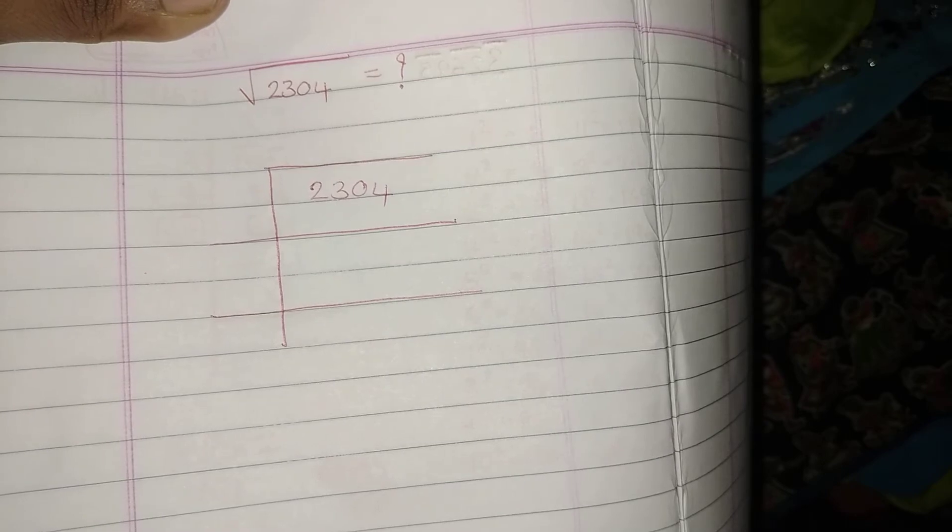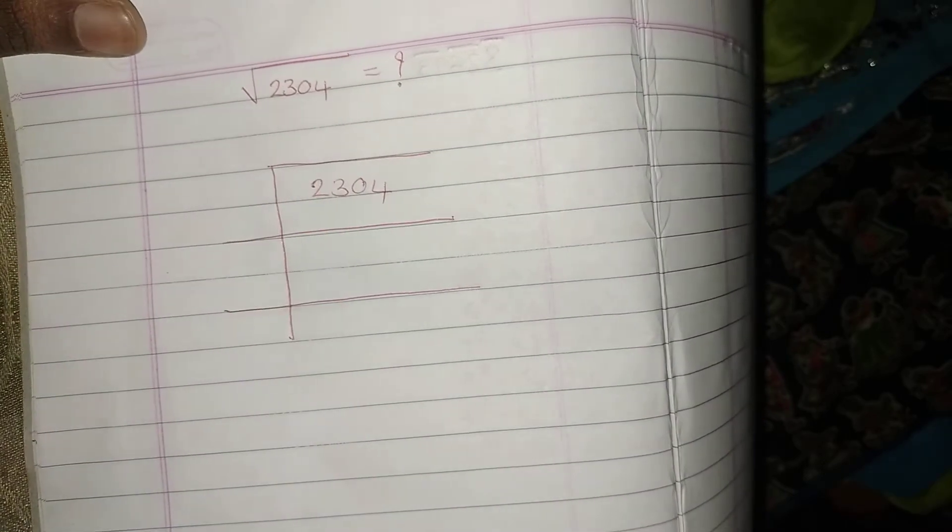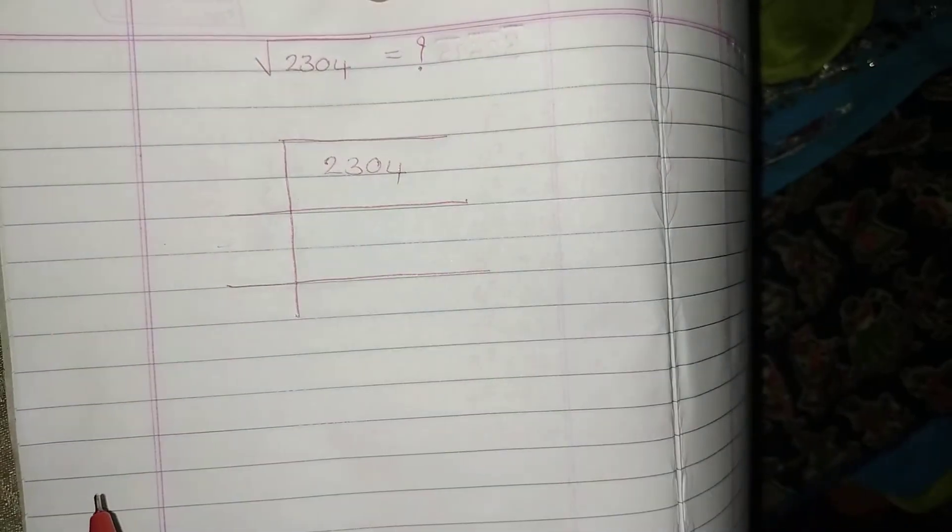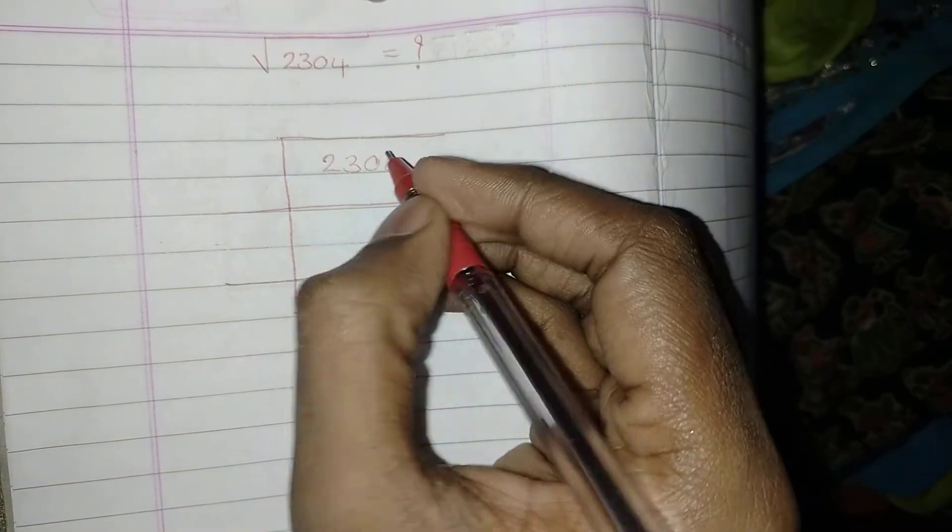Help me out in finding the square root of 2304. Again, 2304 is a perfect square. So firstly we need to draw this table, then we need to write the number inside that, and next we have to make group.